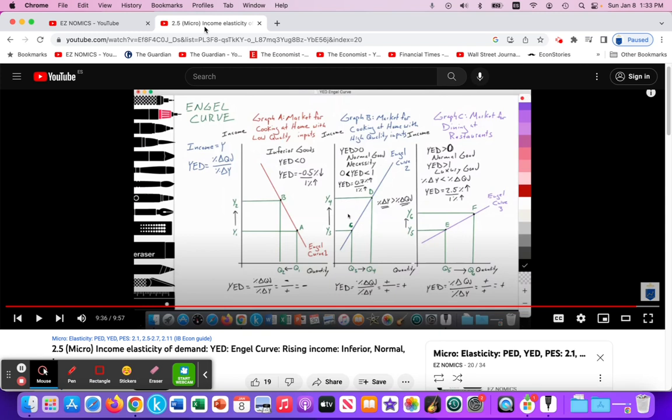We went over the Engel curve in a previous video. We broke it down into three parts, understanding the negative value of the income elasticity of demand representing an inferior good.